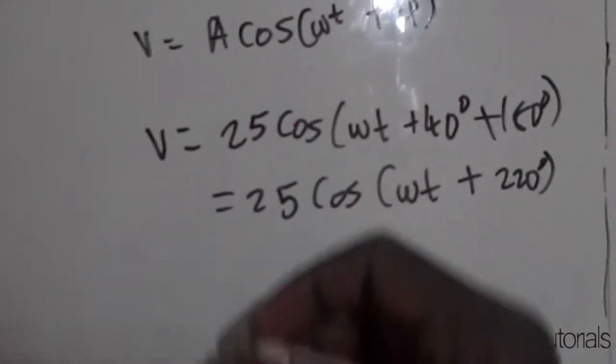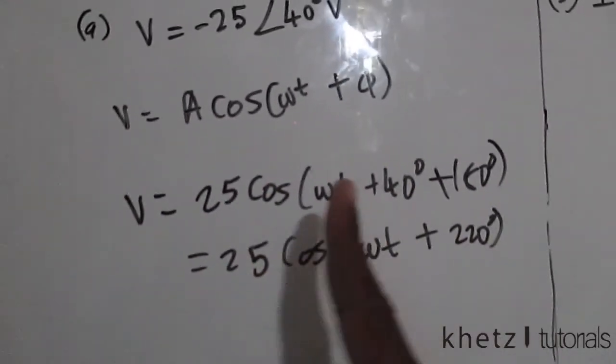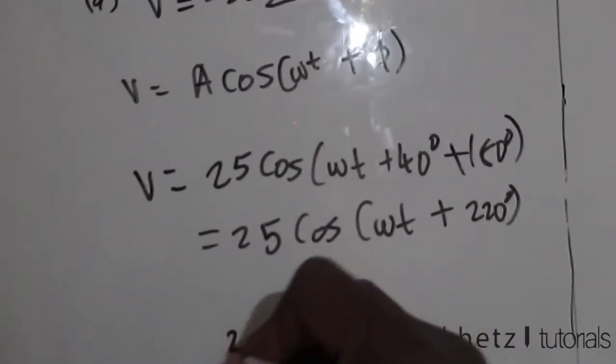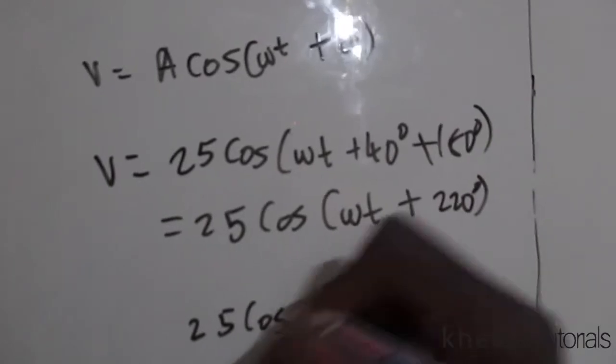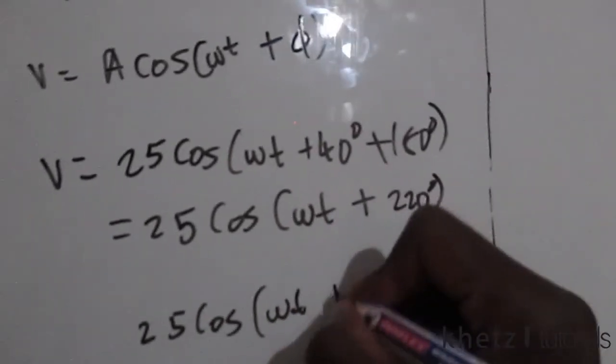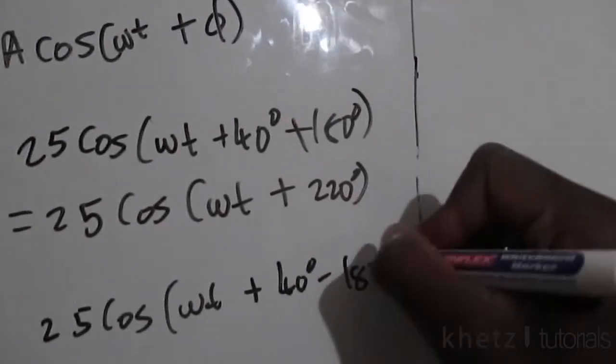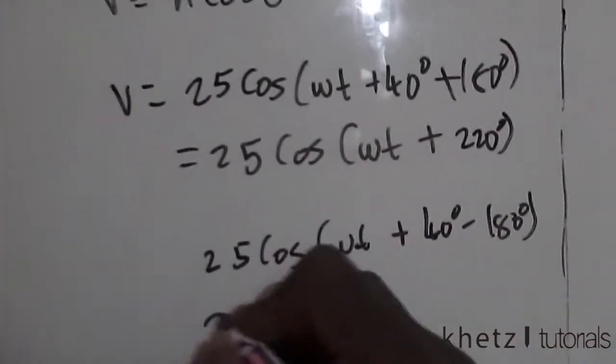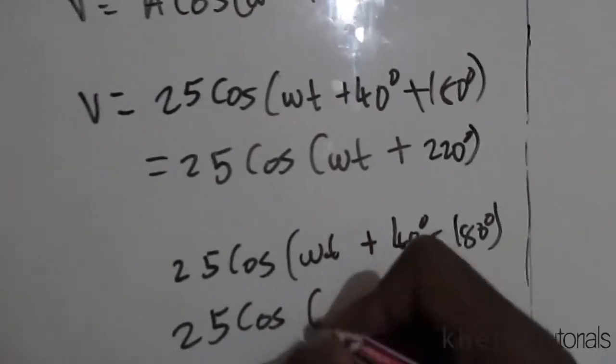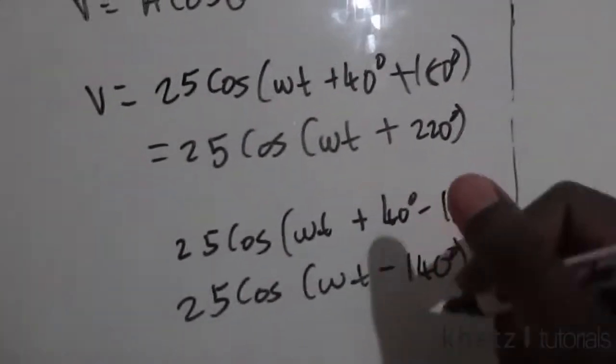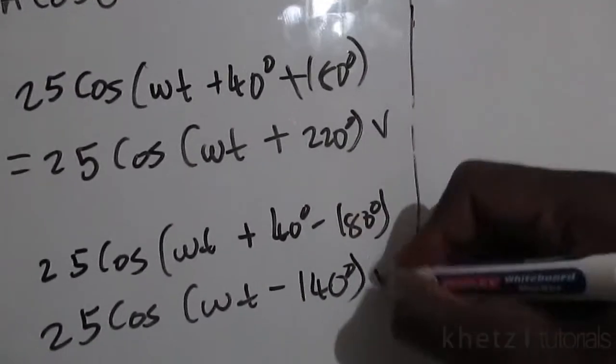Or if you decide to subtract 180 degrees instead, then you basically have 25cos(ωt + 40°) subtract 180 degrees, and the result will be 25cos(ωt - 140°). Don't forget the units.